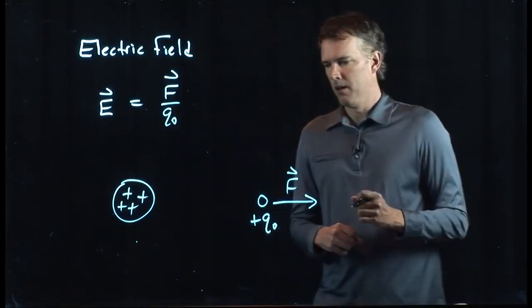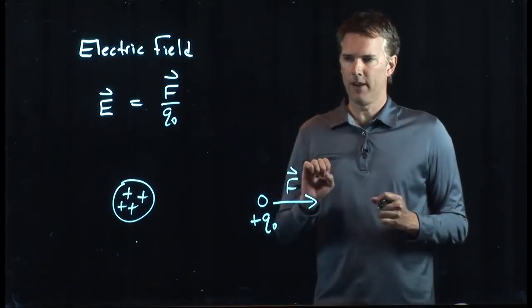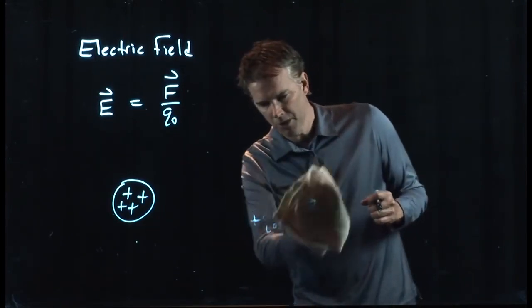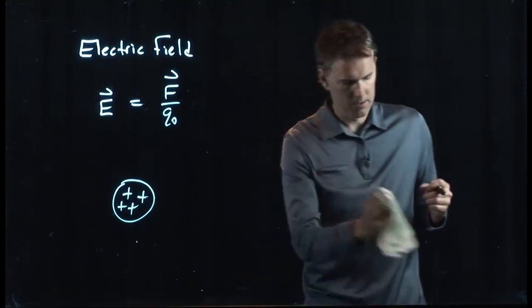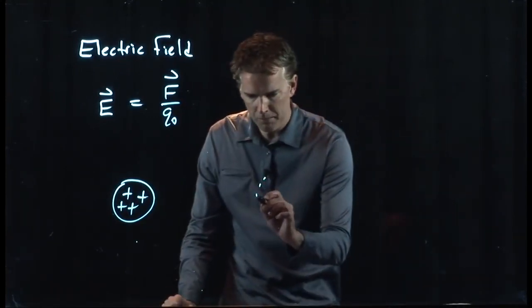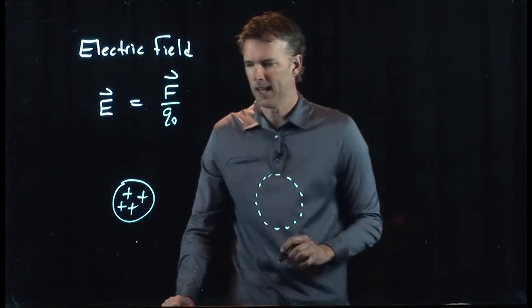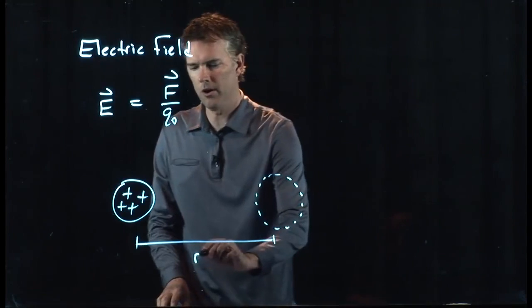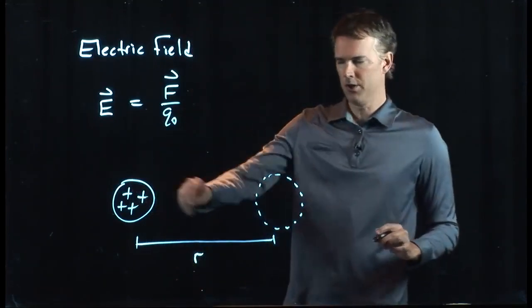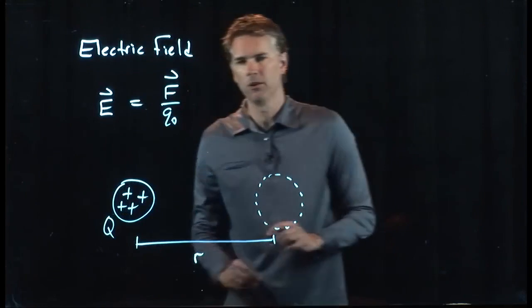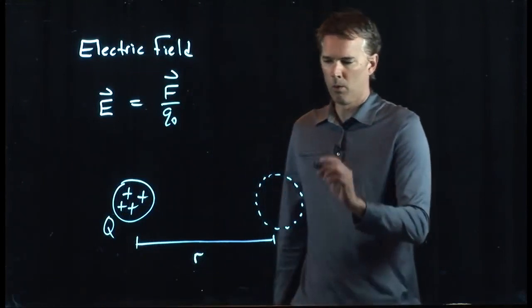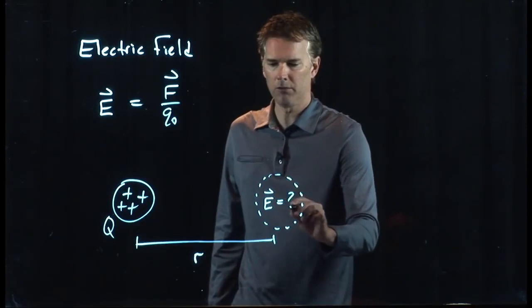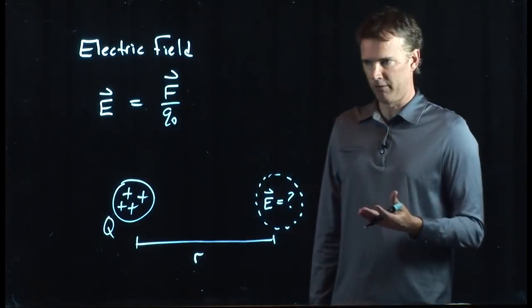Okay, but let's say we don't have any charge there. Let's say we just erase it, and we think about that region of space. And let's say that we are a distance, R, away from our charge, and that charge has a total value of Q. What can we say about the electric field in this region? And what do we even mean by electric field?